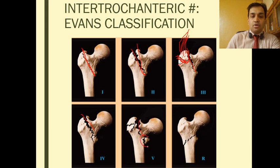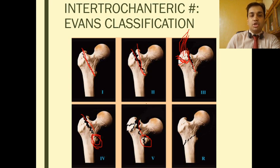Types 4 and 5 have one thing in common: lesser trochanter fracture along with privation or breakage of the calcar femorale. The inferomedial calcar femorale is the most thick and most important weight-bearing structure of the hip.